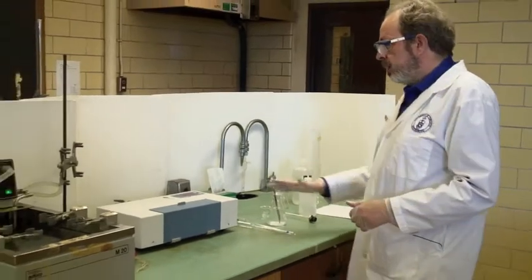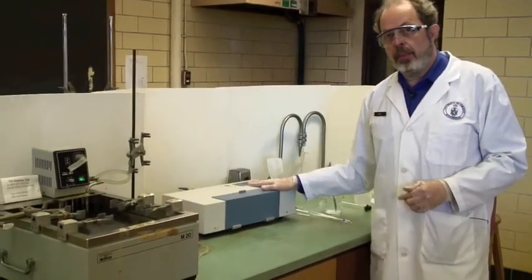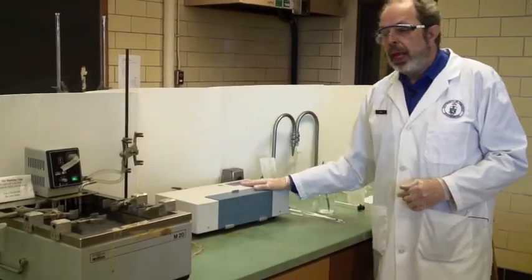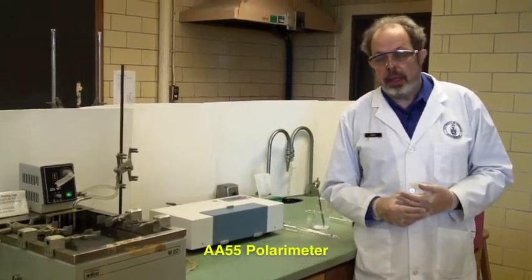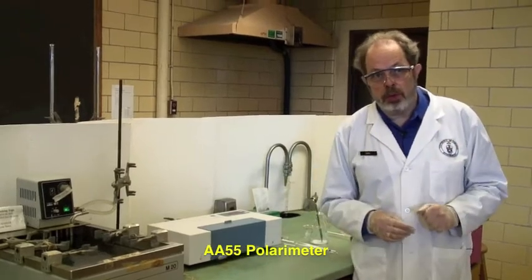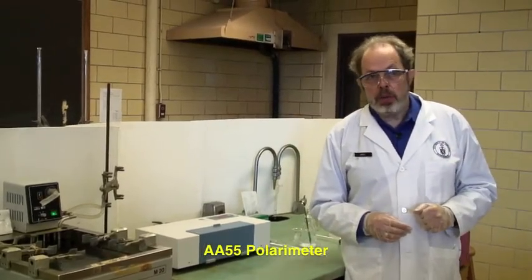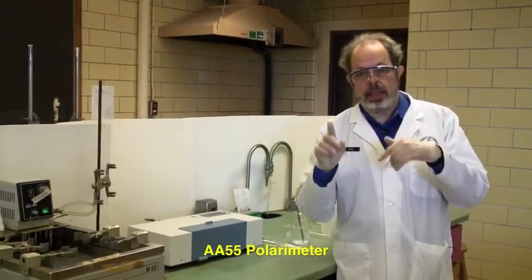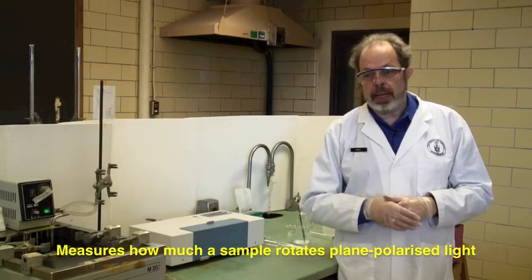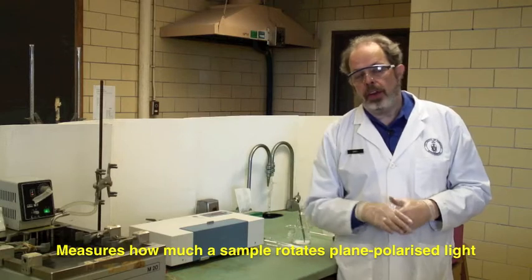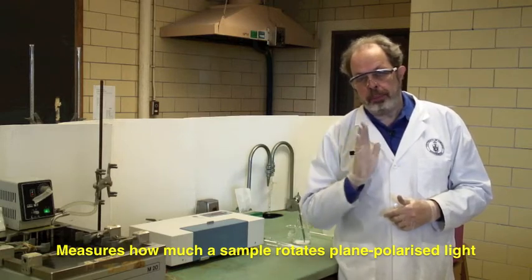This is an AA55 polarimeter. It measures the rotation of plane polarized light. It operates on the same principle as polaroid sunglasses. Most light is scattered, that is it is in all different directions. Plane polarized light has the waves of the light all moving in one plane.